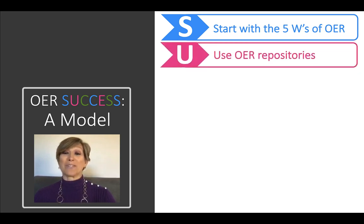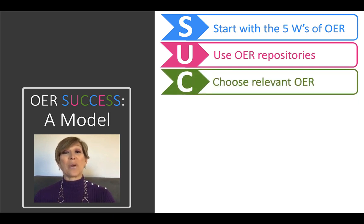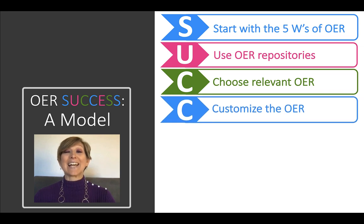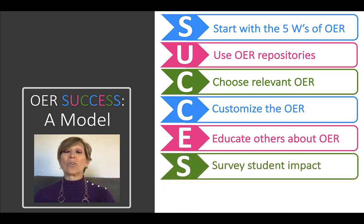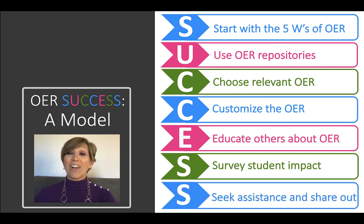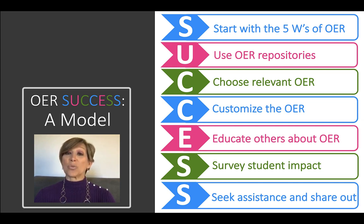The U stands for Use OER Repositories, and equips for an effective search of OER. The first C represents Choose Relevant OER, and guides the selection of OER based on teaching style, course content, and student needs. The second C, Customize Relevant OER, encourages application of the actual five R's to develop more relevant, accessible, and inclusive content. The E, or Educate Others, emphasizes strategies for OER advocacy amongst educators, students, and throughout an institutional community. The second S, or Survey Student Impact, suggests ways of tracking the use and effectiveness of OER. And the last S suggests ways to seek internal or external assistance and encourages the sharing of individual efforts, strategies, and finds to contribute to and grow the OER community.